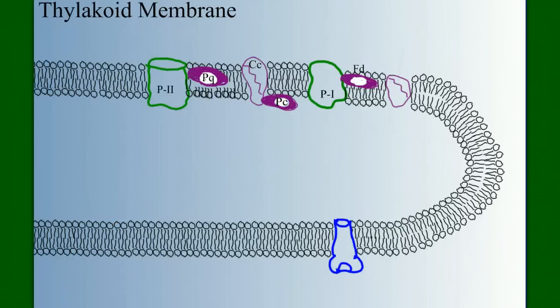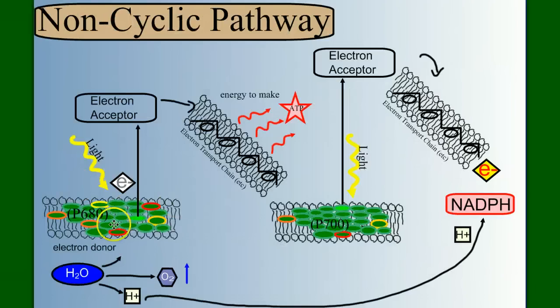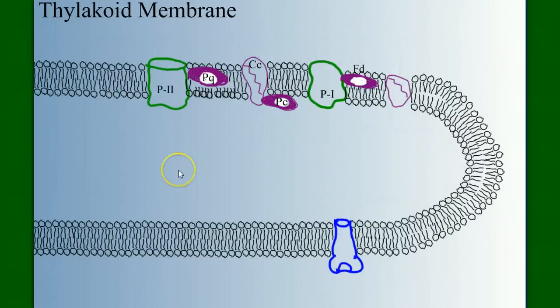To see how this happens, we have to look at the light reactions that we did before, but in a slightly different way. The diagrams we did before showed some of the structure, but it was more of a schematic diagram. In this diagram, we're going to see kind of more realistically what's happening.